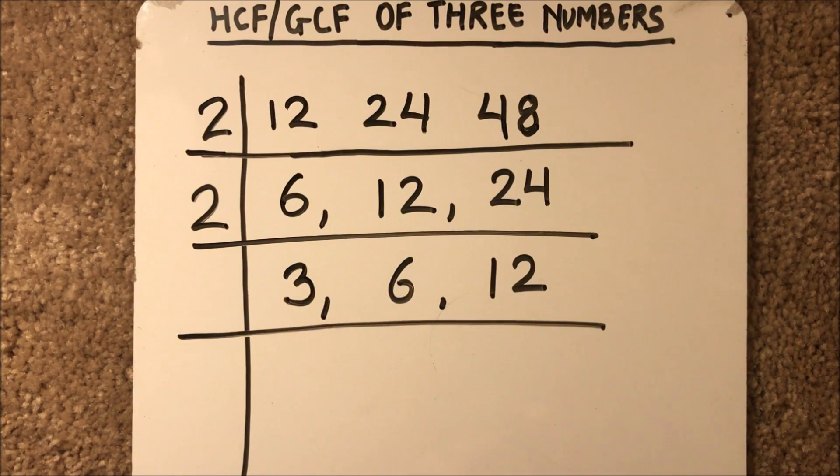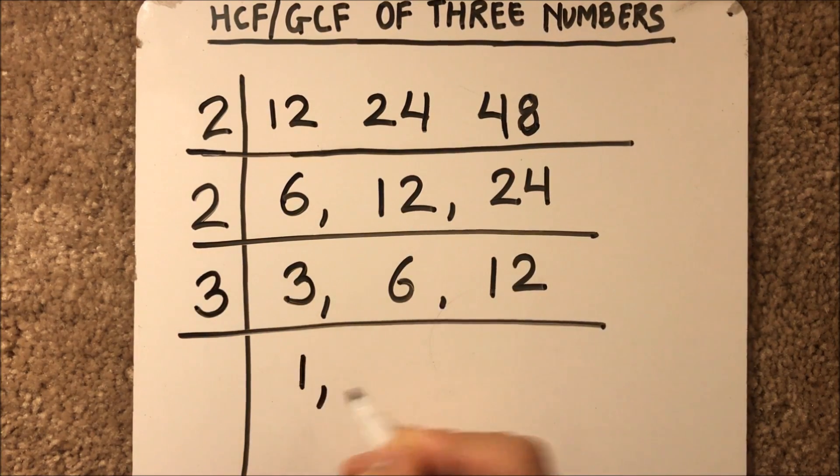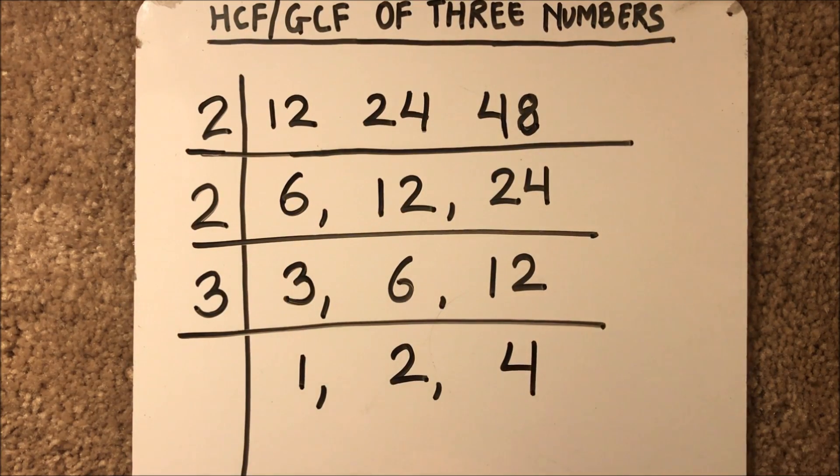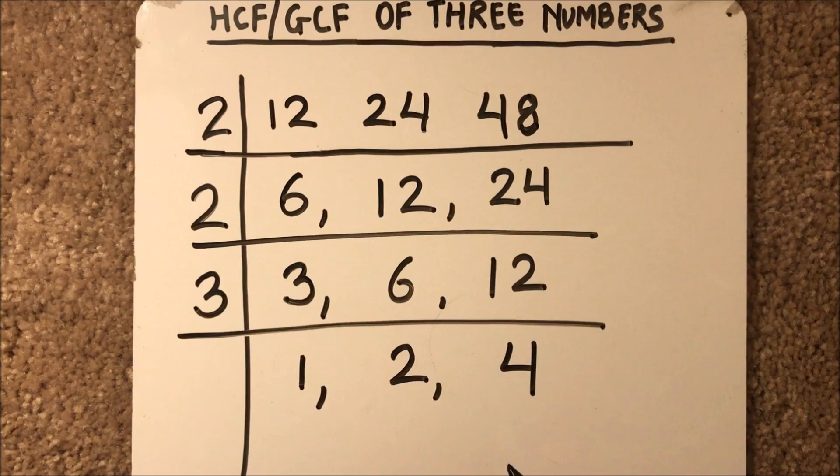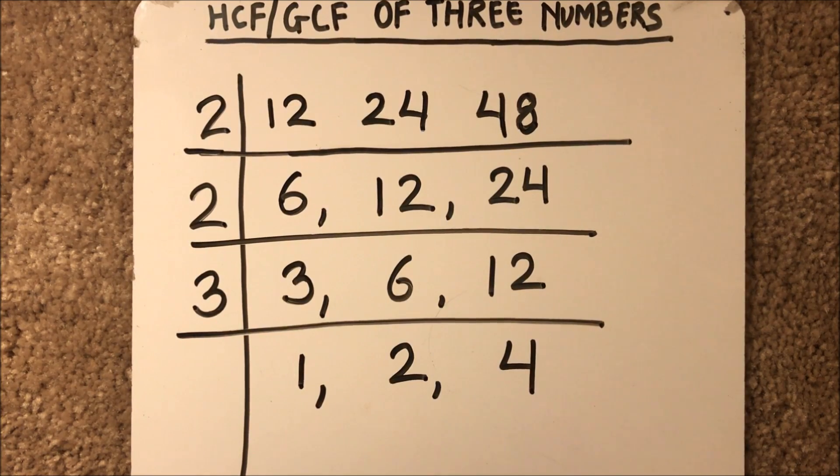Here the common factor is 3. 3 times 1 is 3, 3 times 2 is 6, and 3 times 4 is 12. So we'll stop the division process here. When we see that the numbers cannot be divided by a common divisor, then we'll stop the process of division.